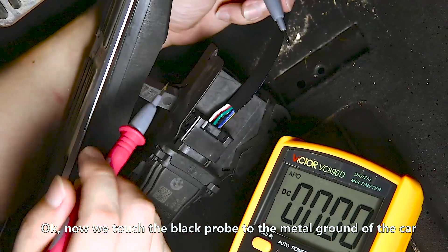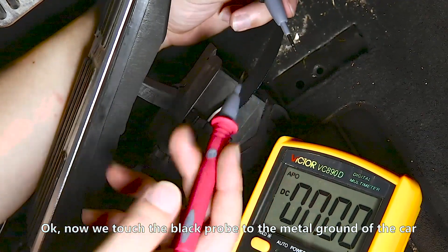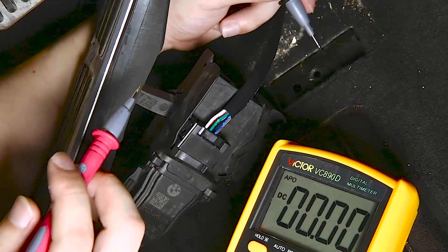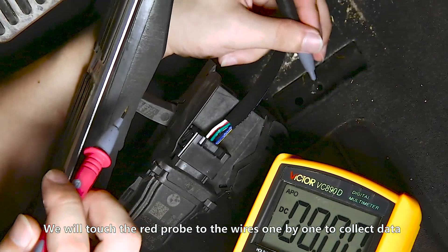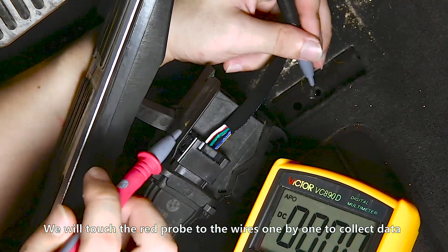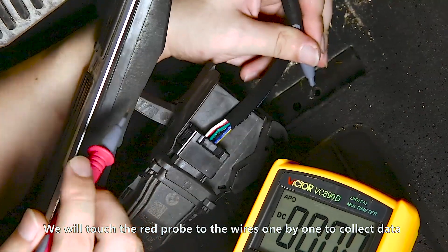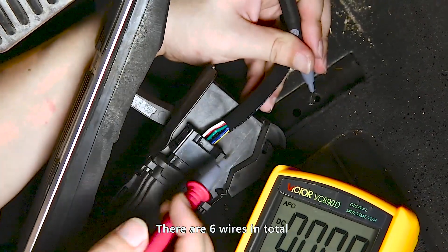Now we attach the black probe to the metal ground of the car. We will attach the red probe to the wires one by one to collect data. There are six wires in total.